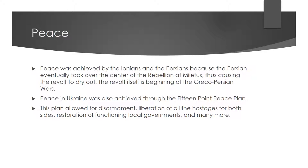Peace was achieved by both the Ionians and the Persians. The Persians instilled a peace plan that both sides found fair and just. Technically the Ionians didn't create their own peace plan, but the Persians accounted for that and made it somewhat fair for both sides. Similarly, between the pro-Russians, the Russians, and the Ukrainians, they too created a peace plan known as the 15-point peace plan, which allowed the pro-Russians to have some demands met while also instilling disarmament, liberation of all hostages, and job-creating plans.